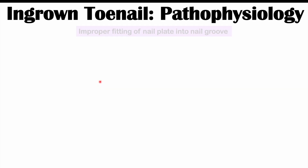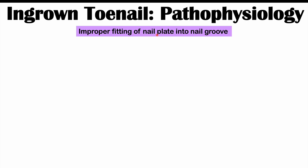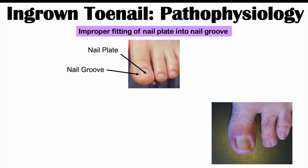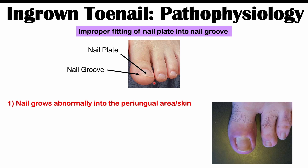The main issue with ingrown toenails is improper fitting of the nail plate into the nail groove. The nail plate is the nail itself, and the nail groove is where the nail plate fits into the skin. What will happen is abnormal growth of the nail into the periungual area or periungual skin.